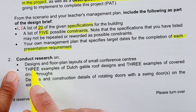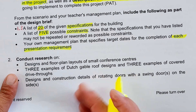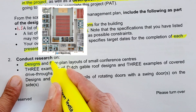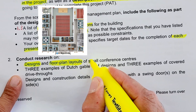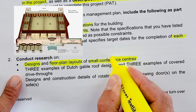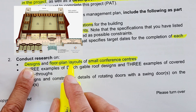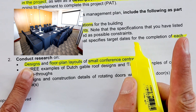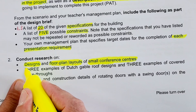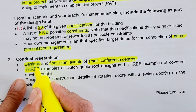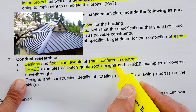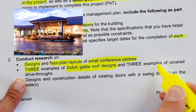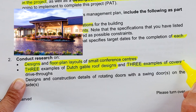Starting by reading what is specified for the research as part of the submission: you have to conduct research on the designs and floor plan layouts of small conference centers — that's a full floor plan with layouts and designs for small conference centers. That's your first component. The second part of your research is at least three examples of Dutch gable roof designs, and then three examples of covered drive-throughs.